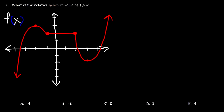Number 8. What is the relative minimum value of f(x)? The location of a relative extreme value is associated with the x-coordinate, while the y-coordinate is associated with the value itself, not the location. So the value of the relative minimum is −2, which is the y-coordinate of that point. Therefore B is the right answer.